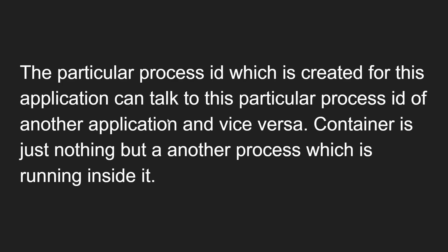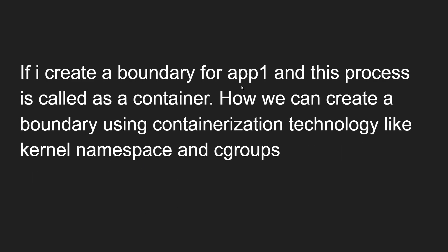Applications can talk to each other with their particular process IDs, and a container is just nothing but another process running inside the operating system. If I create a boundary for app 1, that process is called a container. When a boundary is created for app 1, it is called a container, and we can create this boundary using containerization technologies like kernel namespaces and cgroups, which I will explain later.